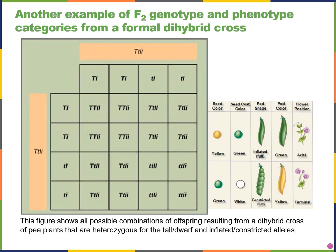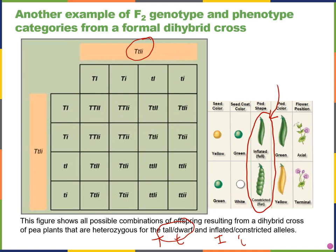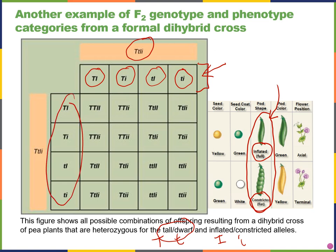Here is another Punnett square showing the F2 generation of a different dihybrid cross using two different characteristics. Big T is tall, small t is dwarf, big I is inflated, and small I is constricted — referring to the shape of the seed pod. The gametes are similar to what we saw before: big T with big I, big T with small I, small t with big I, and small t with small I, with both characteristics represented in each gamete. We will see the typical 9:3:3:1 ratio in the F2 generation.